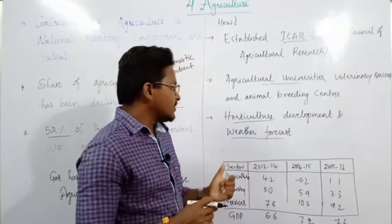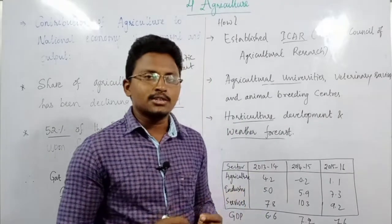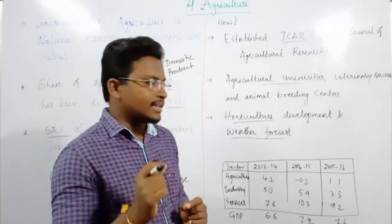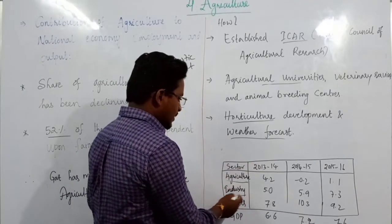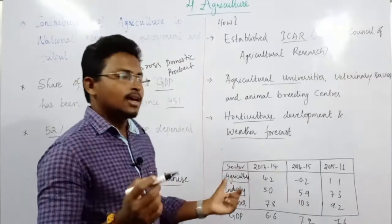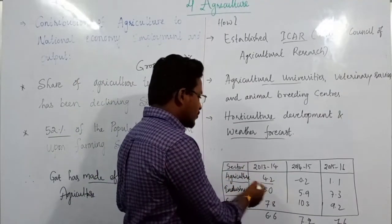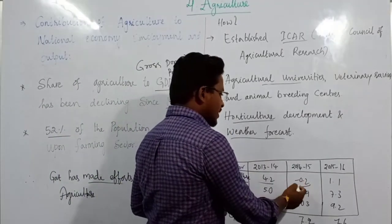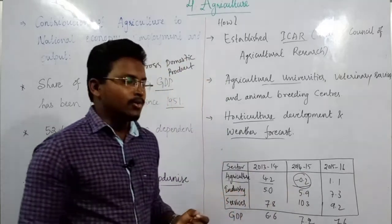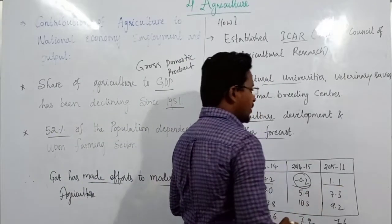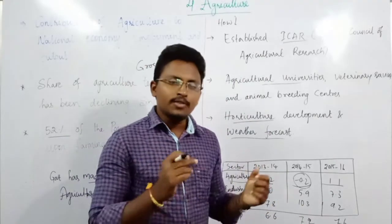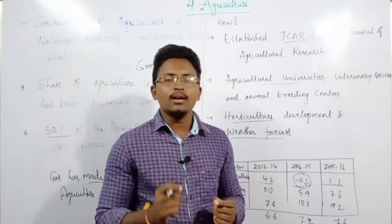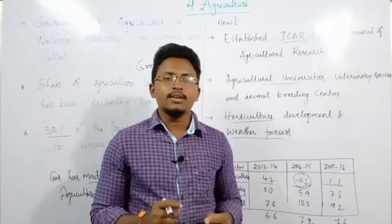Looking at the table in your textbook, the contribution of agriculture to GDP is actually decreasing. In the agriculture sector, in 2013–14 it contributed 4.2% to GDP, but in 2014–15 it went to minus 0.2%, and in 2015–16 it was 1.1%. So agriculture's contribution to GDP is declining day by day.